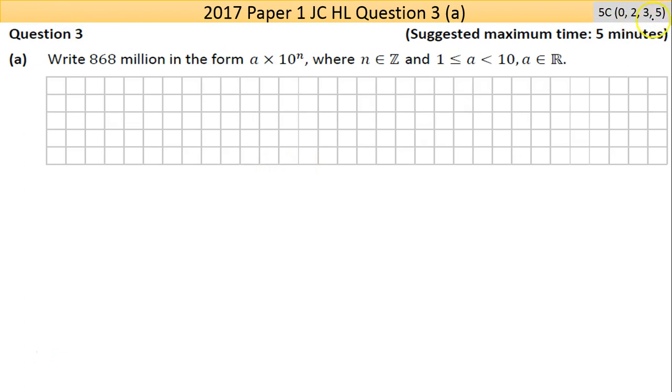Question three is worth 5 marks. Part (a) says write 868 million in scientific notation, in the form a times 10 to the power of n. So a number times 10 to the power of something: 10 to the power of 1 is 10, 10 to the power of 2 is 100, 10 to the power of 3 is 1000, 10 to the power of 4 is 10,000, etc.